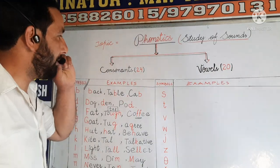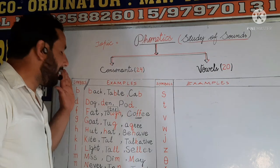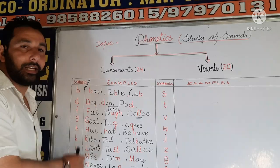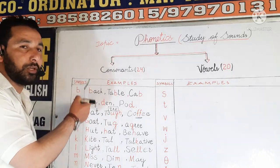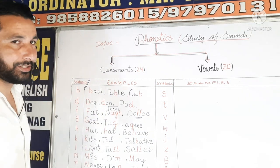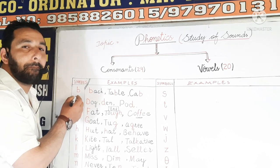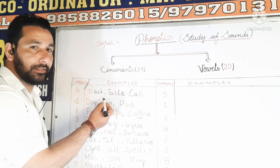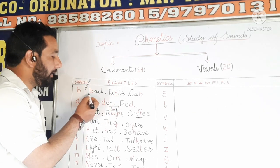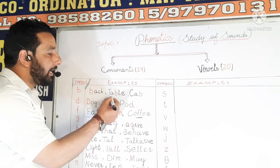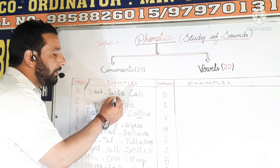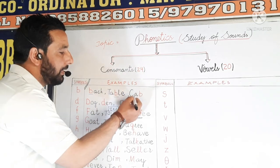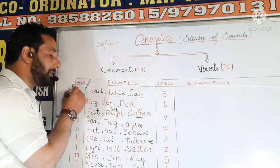I have written the symbols here and the examples that contain these sounds. They have almost the same look as that of lowercase English letters, but they have different sounds. This is B. For example, we have 'back' — in 'back', we have sound B. Next example is 'table' — here we have to pronounce sound B. And next is 'cab' — the sound we produce here is the sound of B.